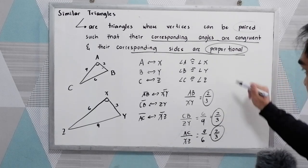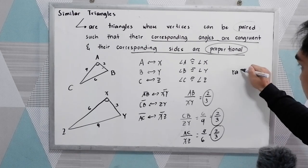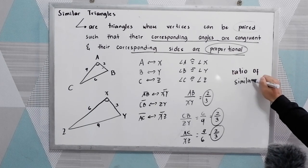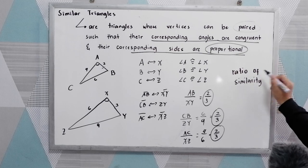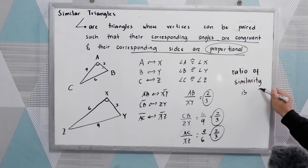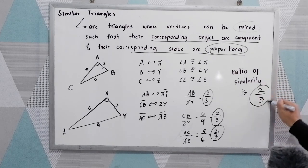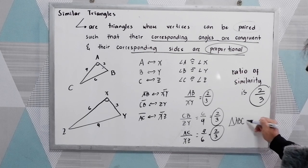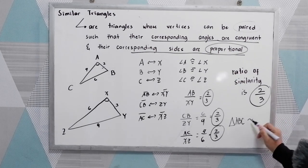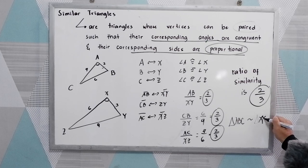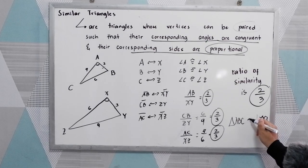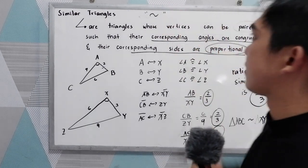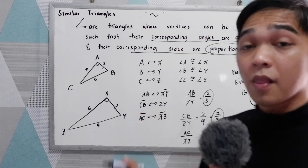This is what we call the ratio of similarity. The ratio of similarity is 2 over 3. We can conclude that triangle ABC is similar to triangle XYZ. Take note of the symbol for similar. That is our example number 1.